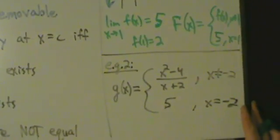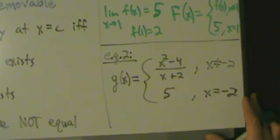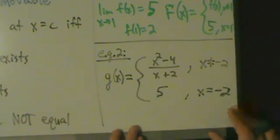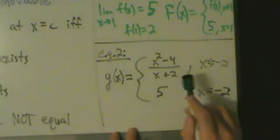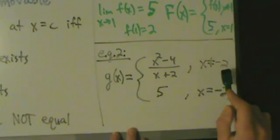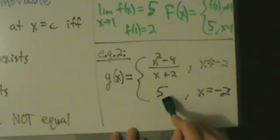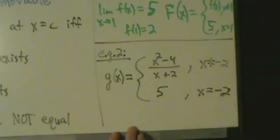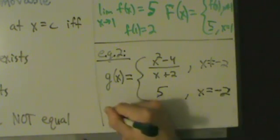So that's example 1. Example 2, without a graph here, let's say g(x) equals x squared minus 4 divided by x plus 2 if x is not equal to negative 2, and it equals 5 if x equals negative 2. So let's do the same thing we did in example 1. Let's find limits first.